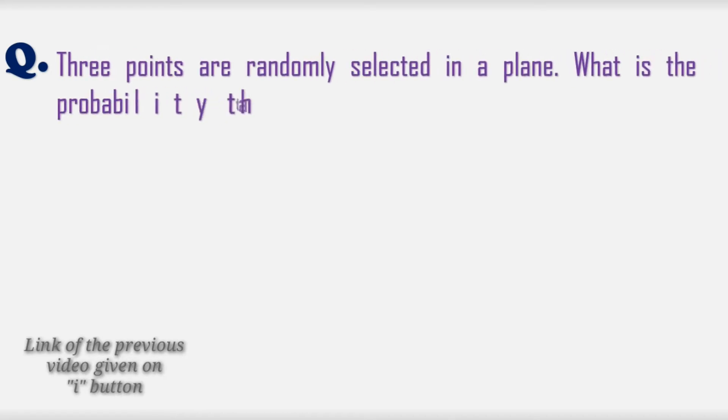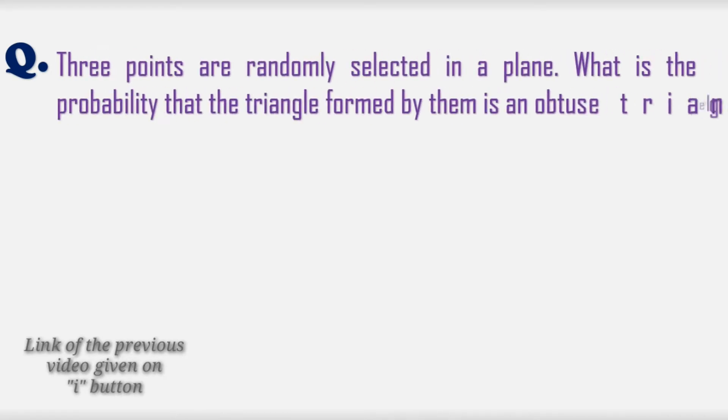Here is our previous question. Three points are randomly selected in a plane. What is the probability that the triangle formed by them is an obtuse triangle? If you have not tried this question yet, you can pause the video for more time.